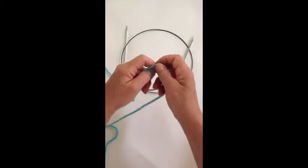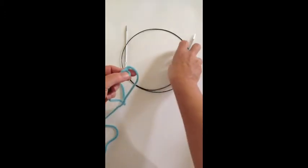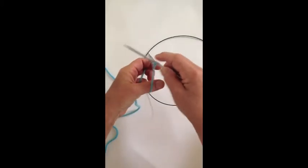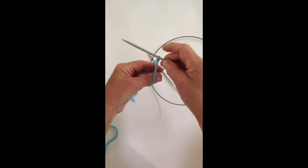Begin with a slip knot, pop that onto your needle and just hold that guy in place with your index finger to make sure that he doesn't get away from you. That's your first stitch.